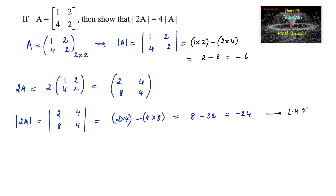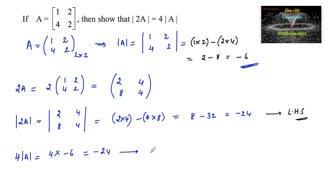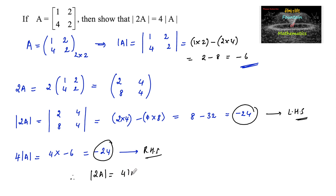So determinant of 2A equals minus 24, and this is the left hand side. Now 4 times determinant of A is equal to 4 into minus 6, which is minus 24. This is the right hand side. We can observe that the left hand side value and right hand side value are both equal, and therefore we can conclude that the determinant of 2A is equal to 4 times the determinant of A.